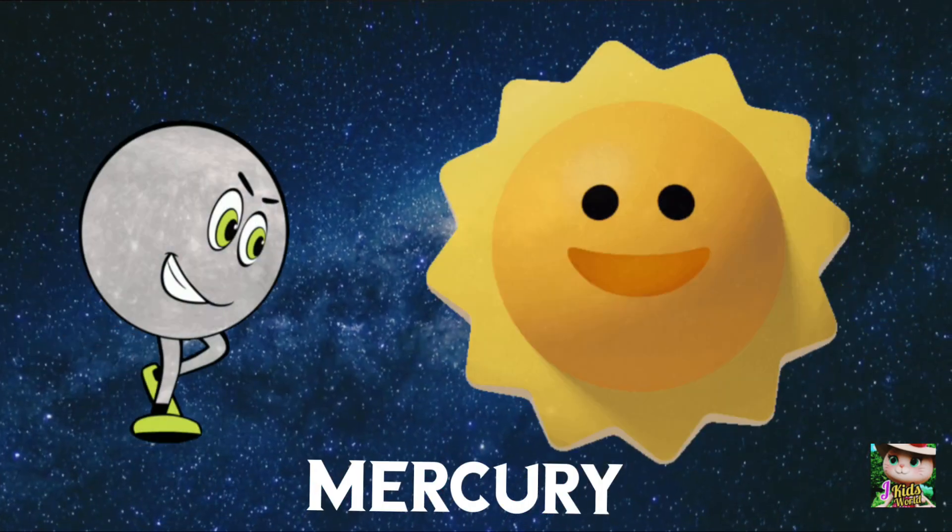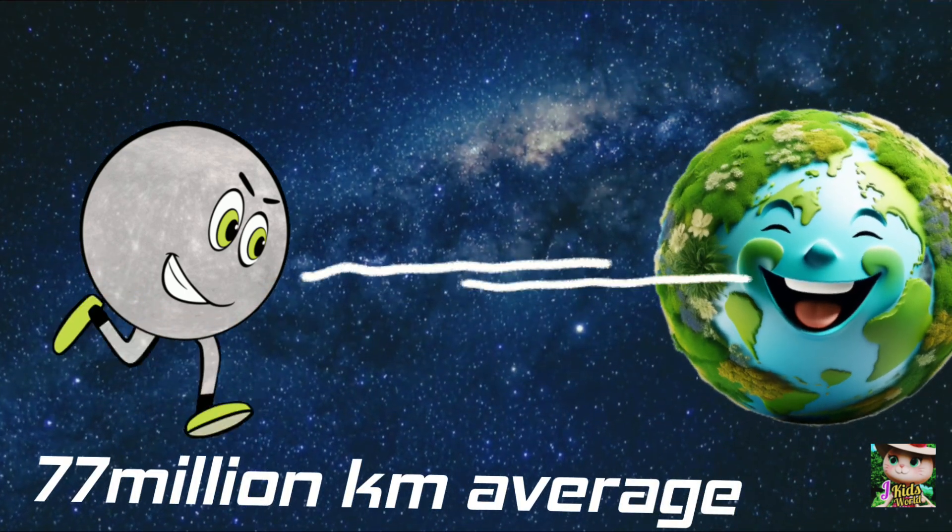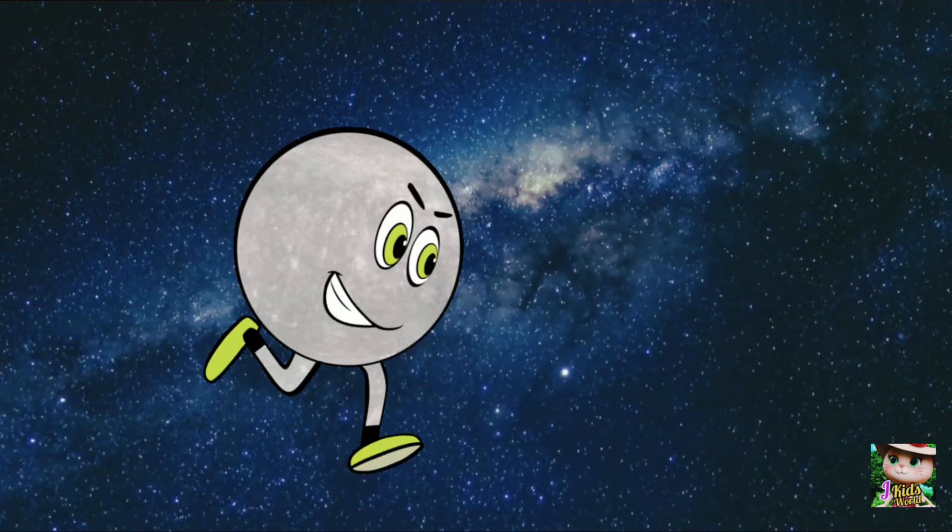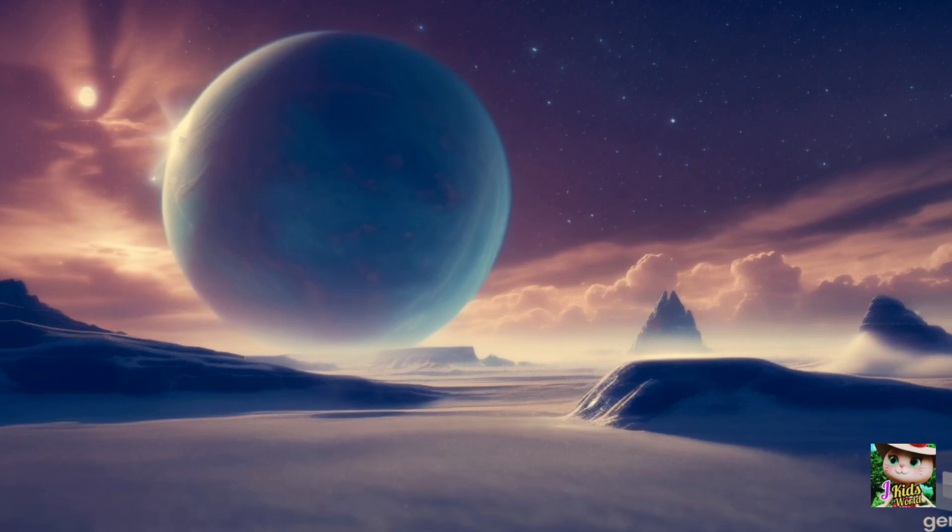Mercury's near the sun, so hot, 77 million kilometers, it's a lot. Small and swift in its race, we can spot it in its place.